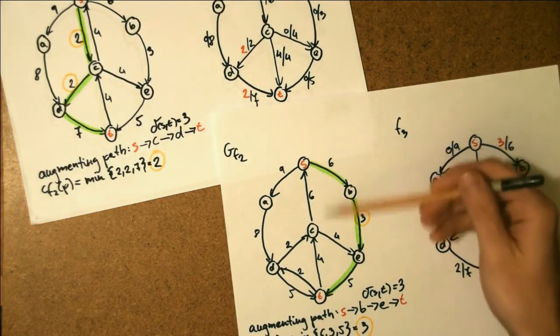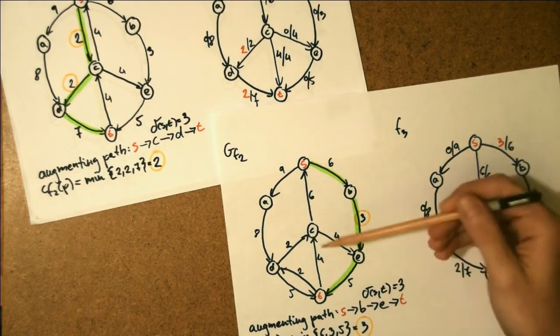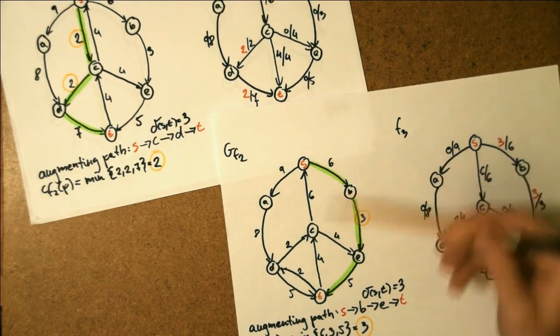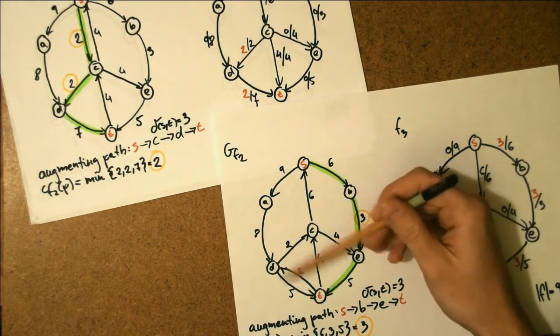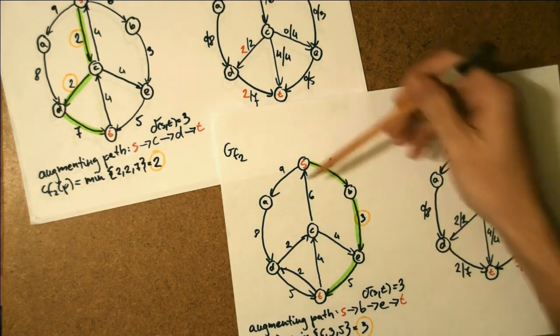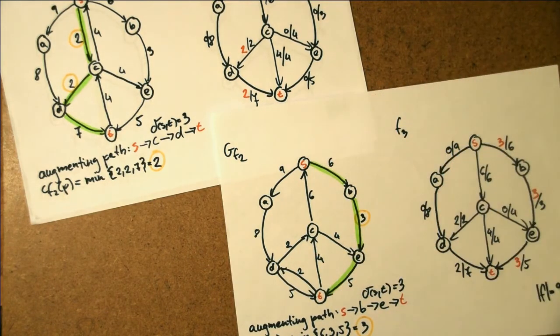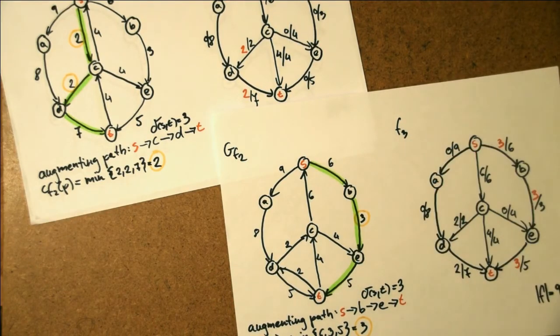Now, edges SC and CD are both fully loaded, so we only have the reverses CS and DC, but we have some capacity left on DT, which is 5. We then choose another augmenting path of length 3, which is SBET of residual capacity 3. We augment the flow again and now we have a flow of 9.